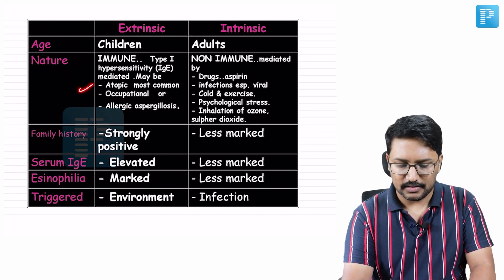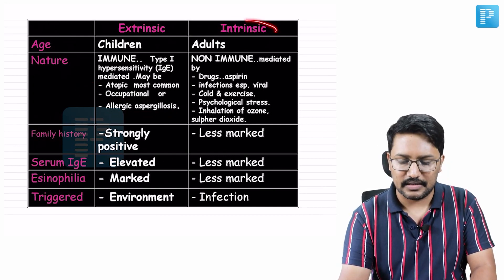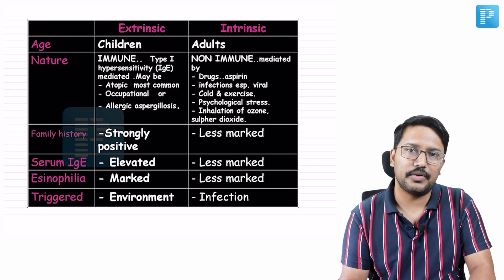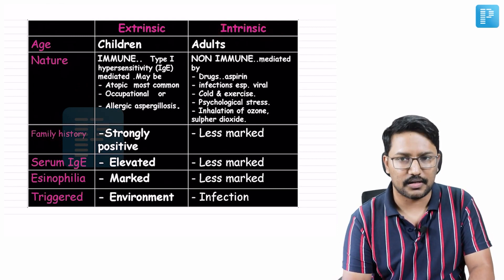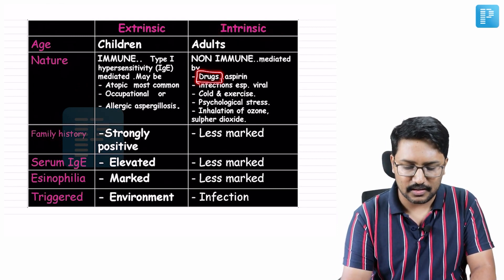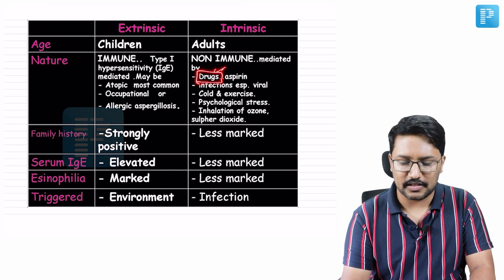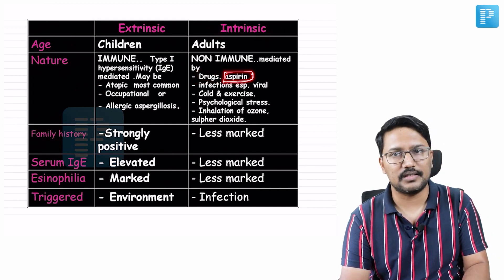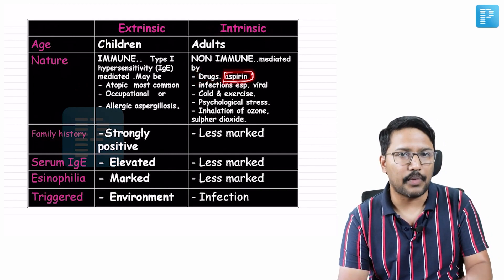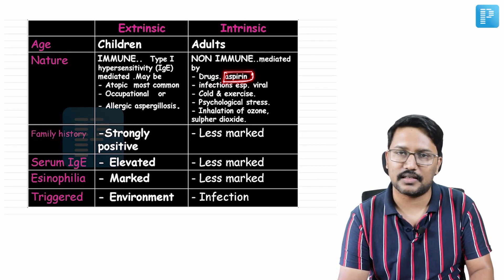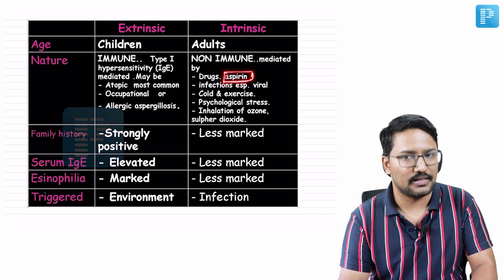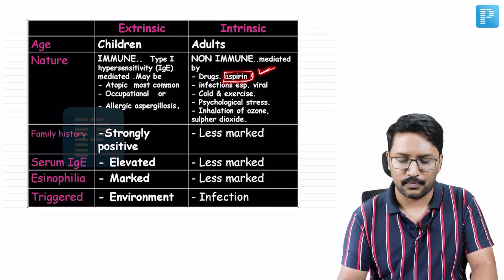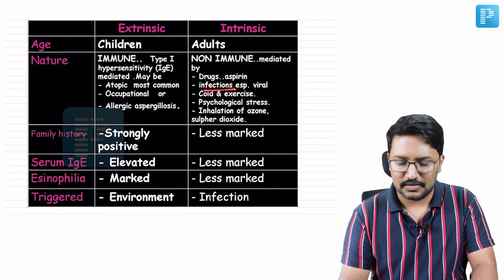Intrinsic asthma is generally believed to be non-immune mediated. Drugs may be a reason for precipitation — aspirin is a classical example. Aspirin sensitivity is part of intrinsic asthma, not extrinsic asthma.